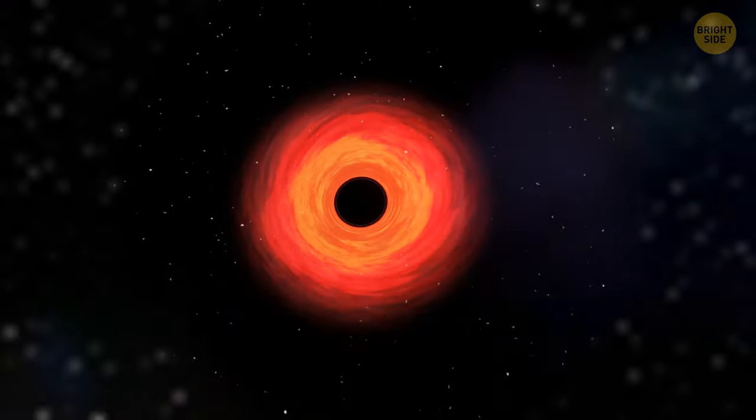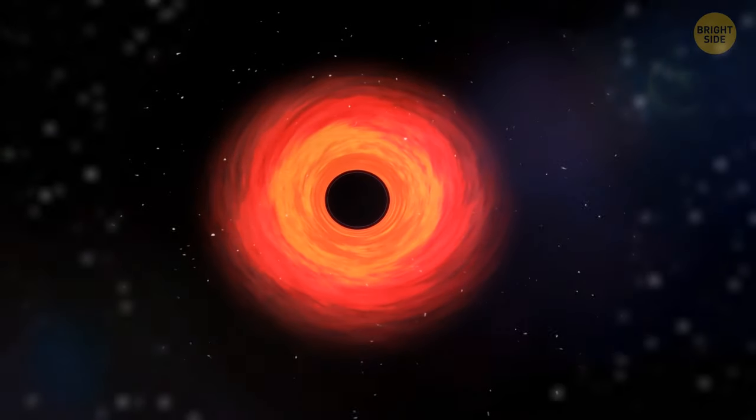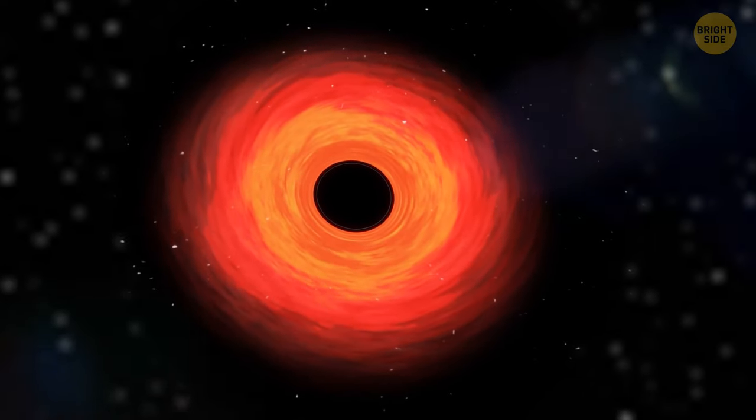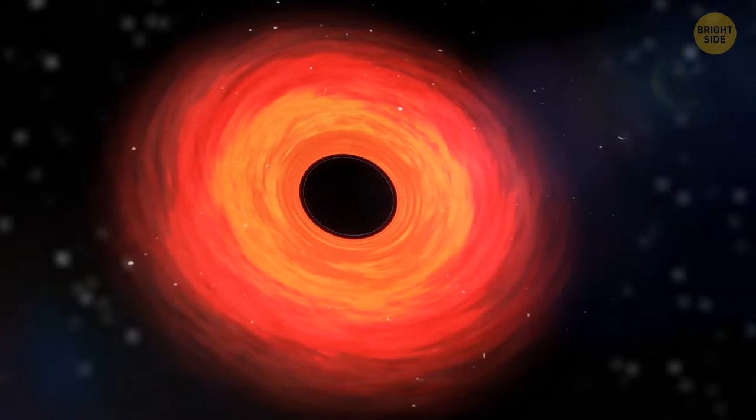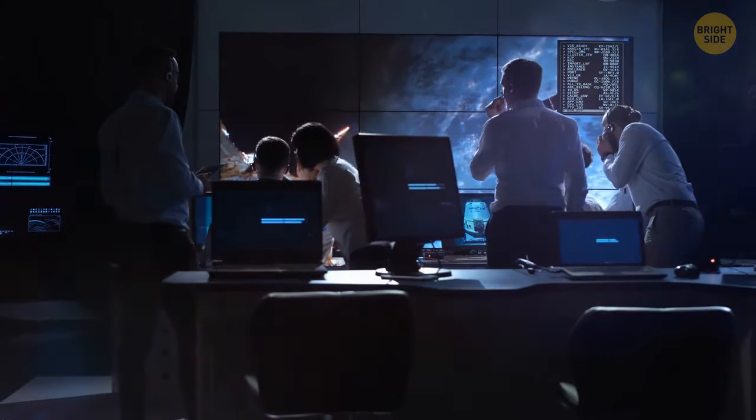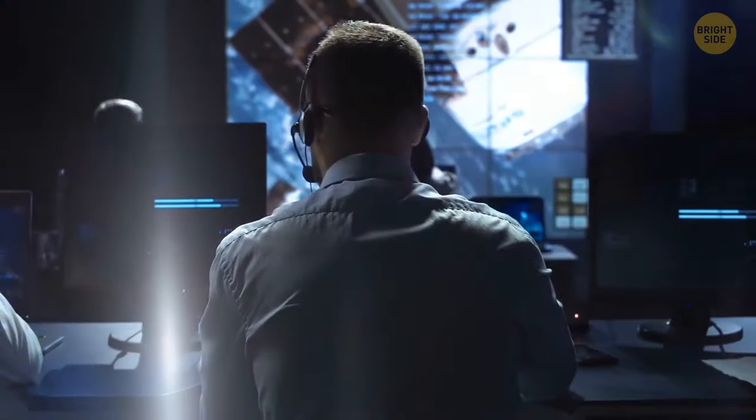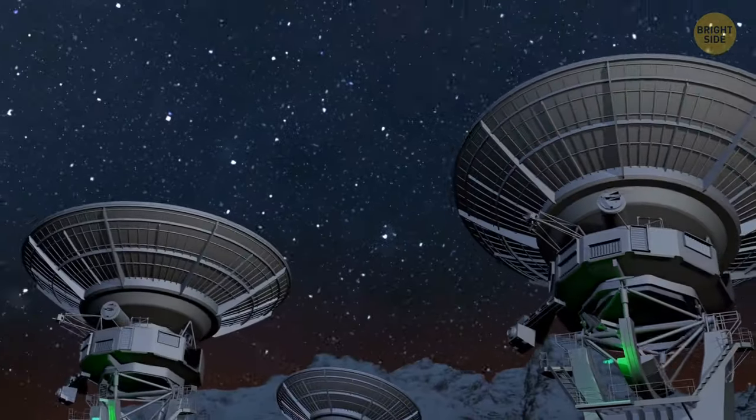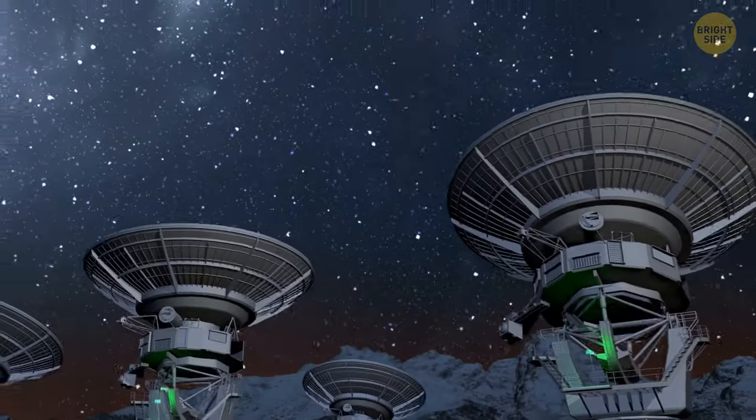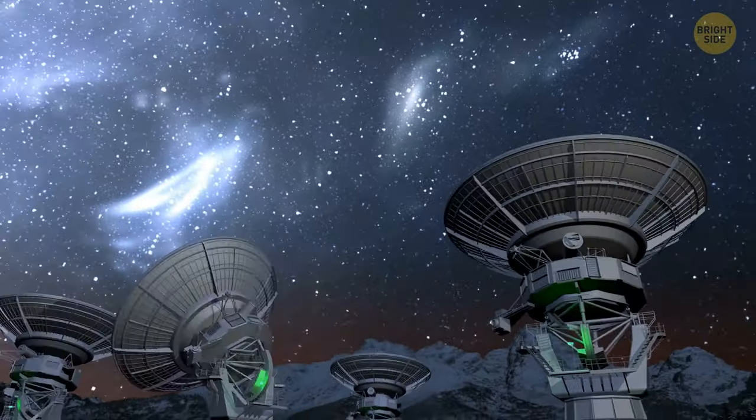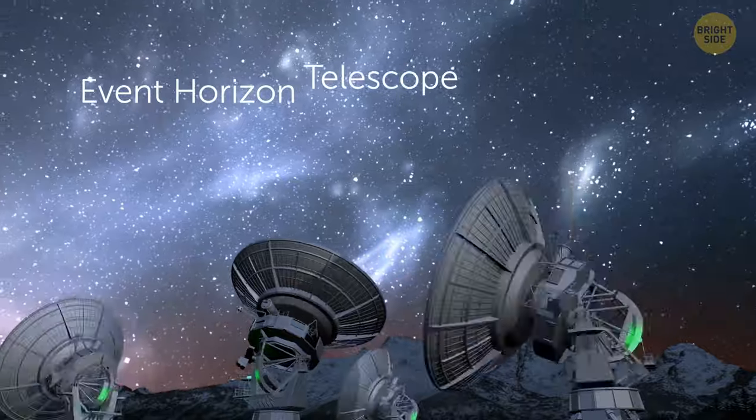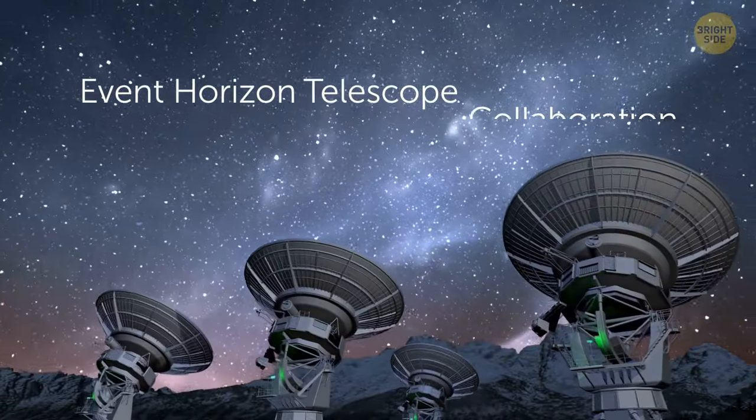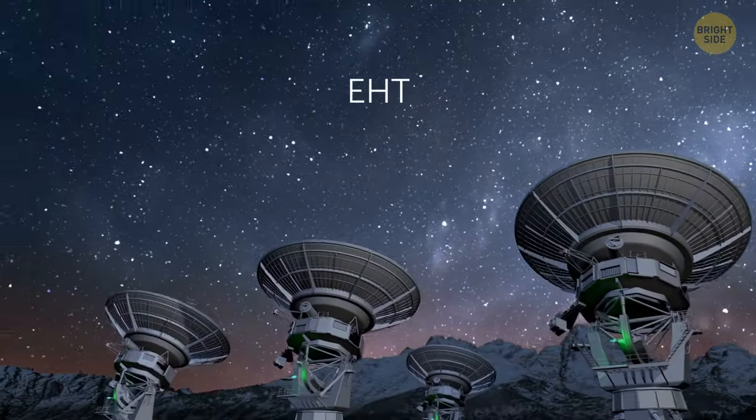The first-ever mugshot of a black hole appeared in 2019. But the data for its creation was collected in 2017. It took an international team consisting of more than 200 astronomers two years to assemble the image. We can admire this amazing space phenomenon thanks to a vast global network of telescopes called the Event Horizon Telescope Collaboration, or simply EHT.